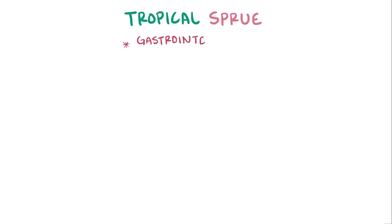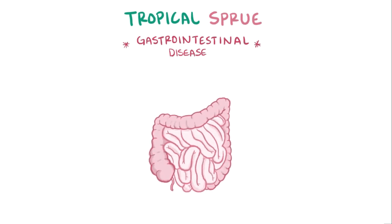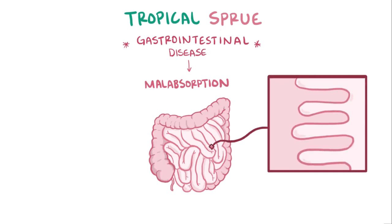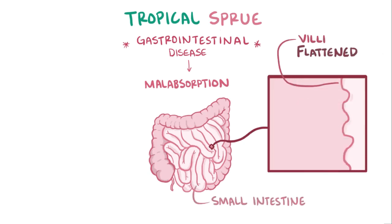Tropical sprue is a gastrointestinal disease that results in malabsorption of nutrients and water. Just like other sprue diseases, like celiac sprue which is more often known as celiac disease, in tropical sprue the villi of the small intestine become flattened, but the exact cause of this isn't known.